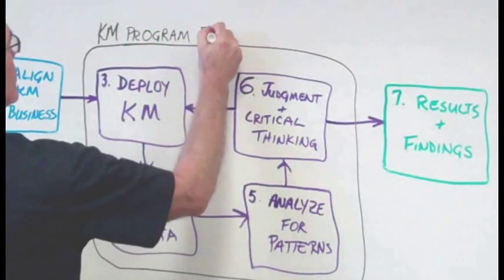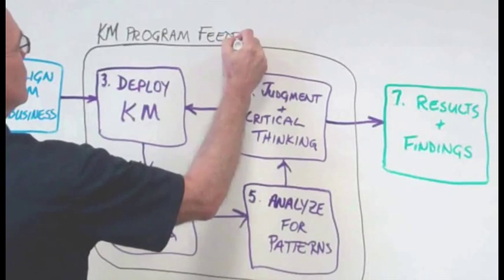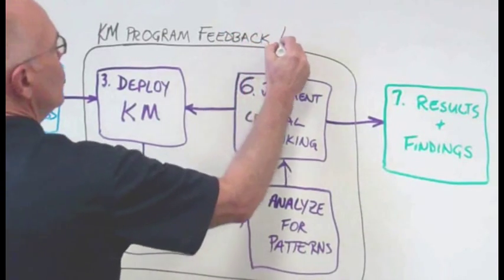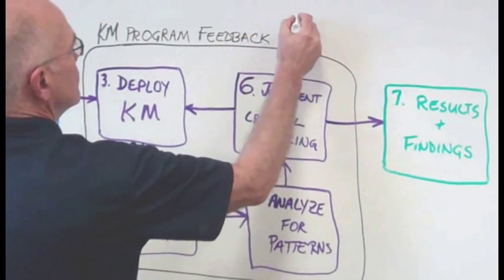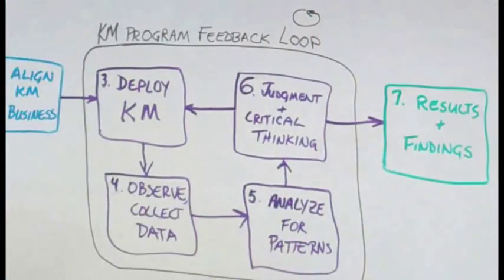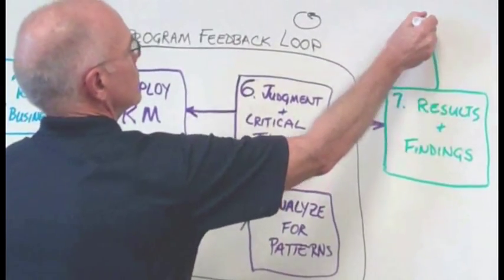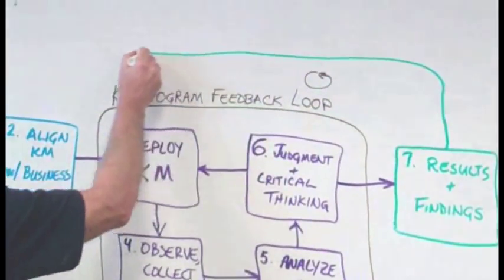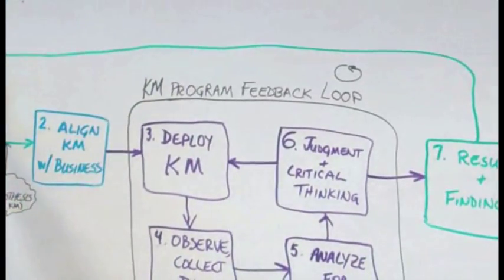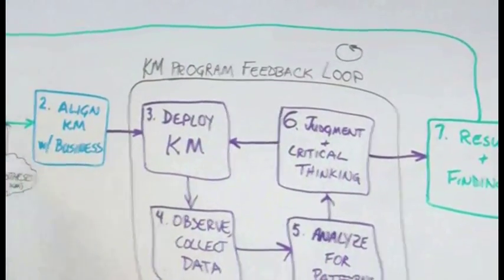At the end of the scientific method, we usually draw conclusions. In this case, it's, did the KM approaches we implemented help the business achieve the desired goals and quantify that alignment with business objectives? Now, whether that's a yes or a no, let's go back to the beginning, all the way to step one, and ensure our KM approaches continue to be aligned with business objectives.